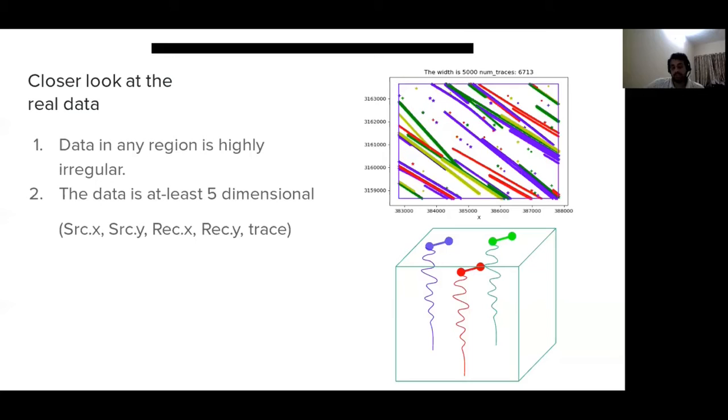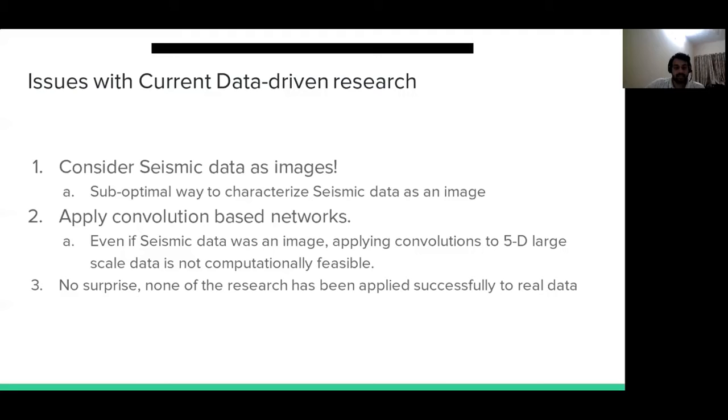Secondly, if you look at a single trace, you can clearly see that it's at least five-dimensional data: two dimensions per source and receiver, and one dimension for trace. The problem is that first, seismic data are not images, and if you want to characterize them as images, it would probably be suboptimal.